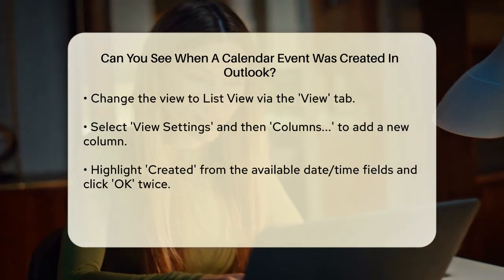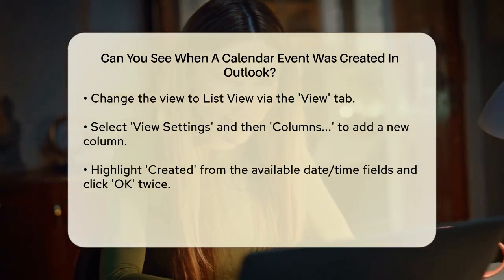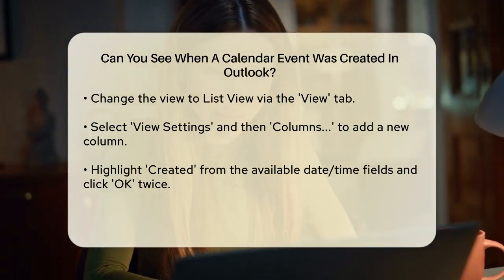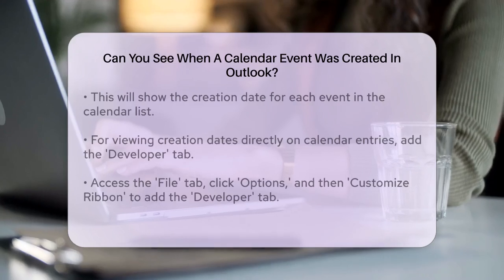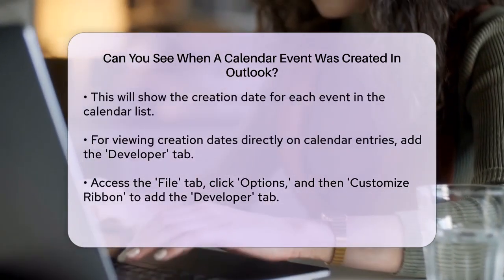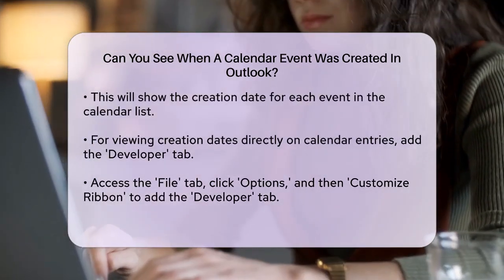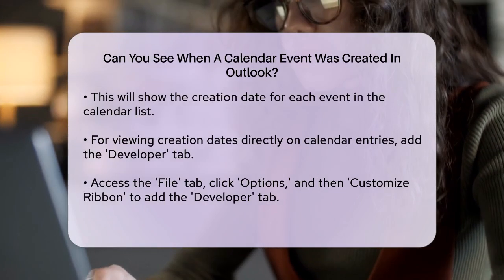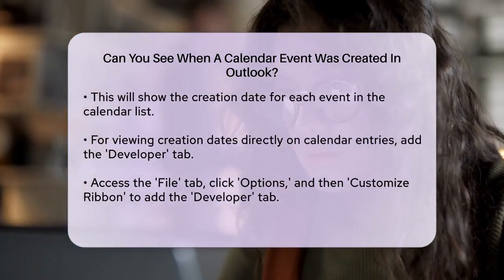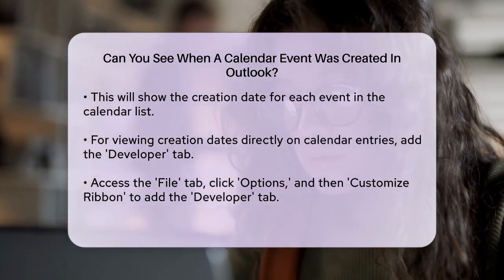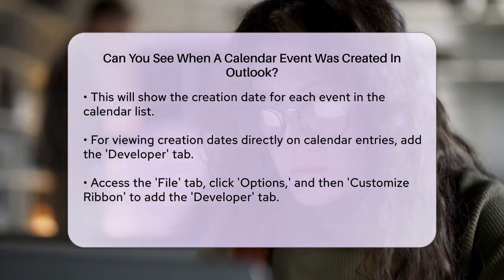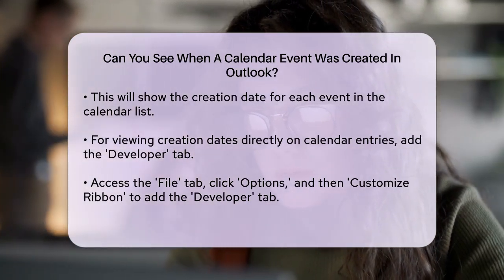If you prefer to see the creation date directly on the calendar entry without switching to List View, there's another method, although it's a bit more involved. You need to add the Developer tab to your Outlook ribbon if it's not already there. To do this, go to the File tab, click Options, then Customize Ribbon, and add the Developer tab.